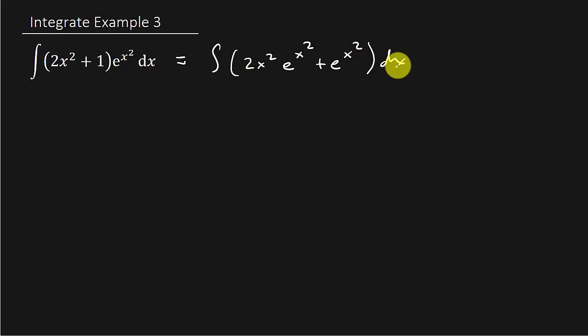And then I want to separate this into two separate integrals. So that's going to be the integral 2x squared e to the x squared dx plus the integral e to the x squared dx.